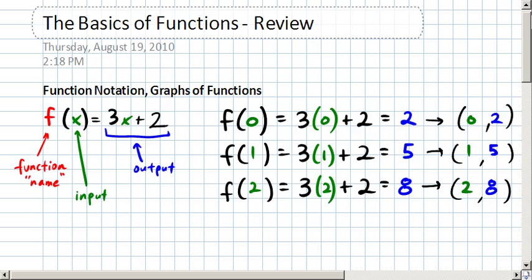This then translates to 3 ordered pairs: 0, 2, 1, 5, and 2, 8.